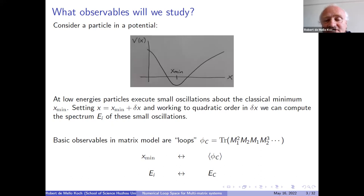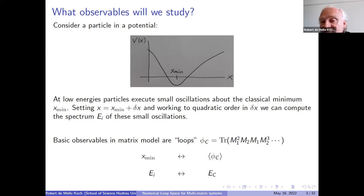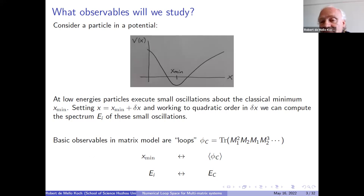Imagine you have some potential and there's a particle rattling around in that potential. One interesting question to ask is if you just let that particle go, where would be the classical equilibrium point? That would be at the minimum of the potential, X_min. Then you could bump it a little bit and it would rattle around at the bottom of the potential. At the quantum level, those oscillations would be quantized and you would get some spectrum for the small oscillations.